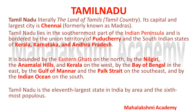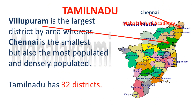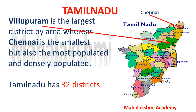Tamil Nadu is the eleventh largest state in India by area and the sixth most populous state of India. In this slide we have two notable districts: one is the largest district by area — that is Villupuram, as you can see on the map — and the other is Chennai, the capital, which is the smallest but most populated and densely populated district of Tamil Nadu.